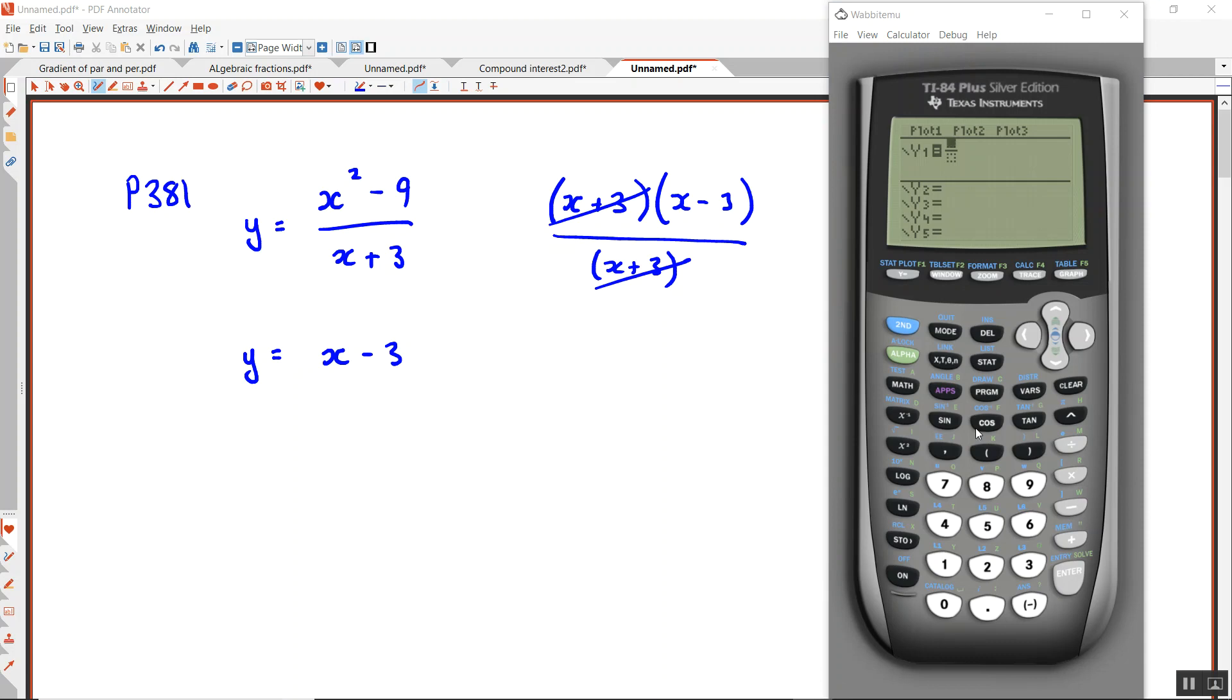If we put in x squared minus 9, and we put in x plus 3 there, we graph that and we get a straight line. And then we put in the simplified version which is x minus 3, and it does look like we just get the same thing.